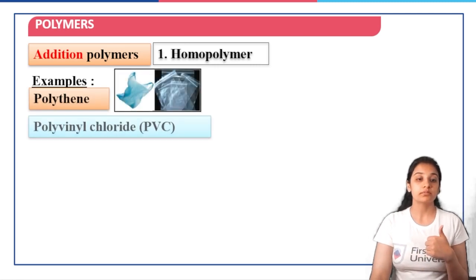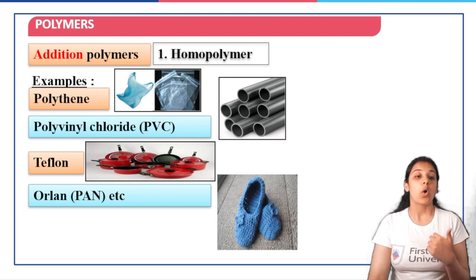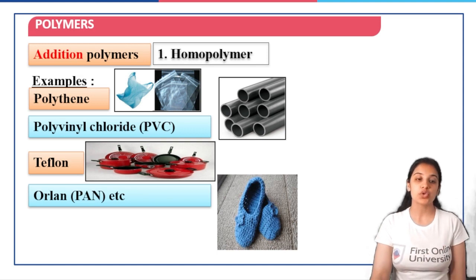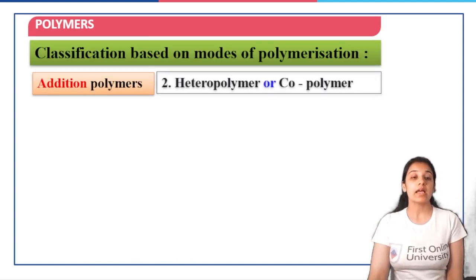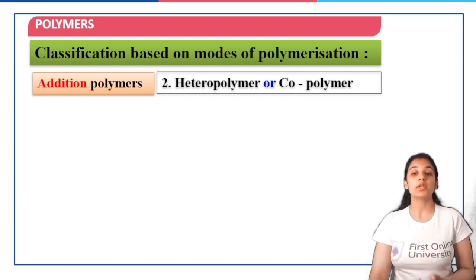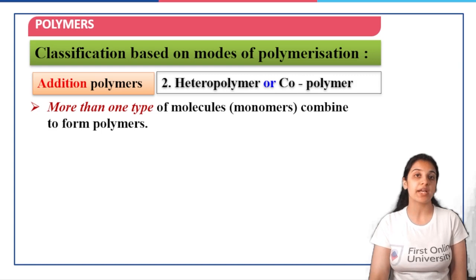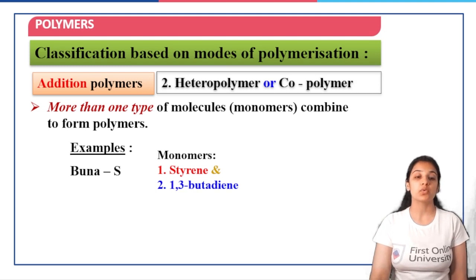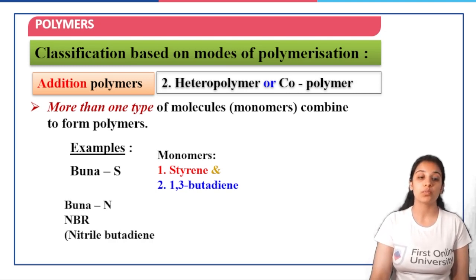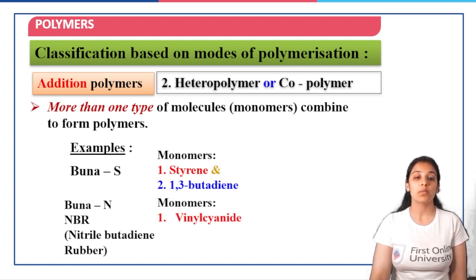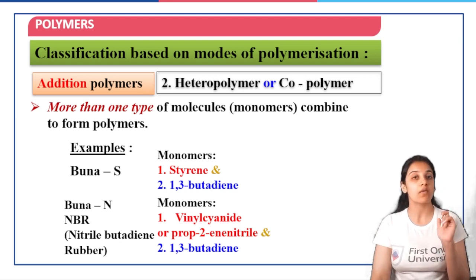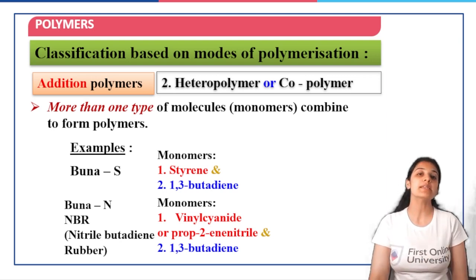Other examples of homopolymers include polyvinyl chloride, Teflon, and polyacrylonitrile (PAN). Then we have heteropolymers or copolymers, where more than one type of monomer combines to form the polymer. For example, Buna-S where the monomers are styrene and 1,3-butadiene. Then Buna-N, also known as nitrile butadiene rubber (NBR), where the monomers are acrylonitrile and 1,3-butadiene. You need to remember — Buna-S and Buna-N are very important polymers for which you need to remember the monomers involved.